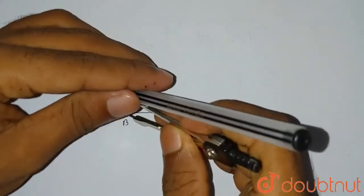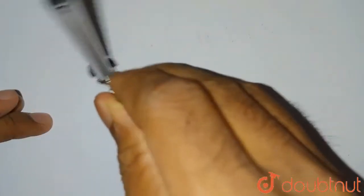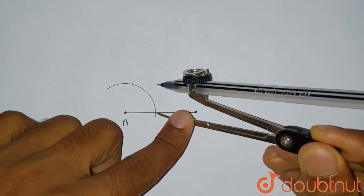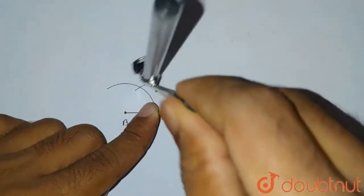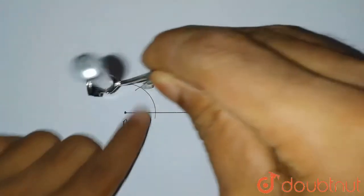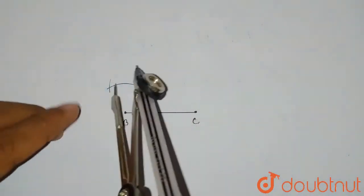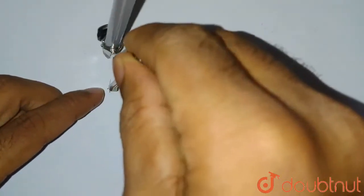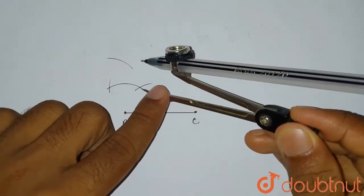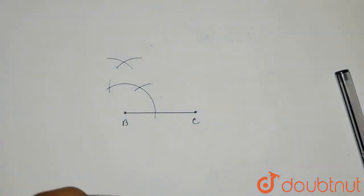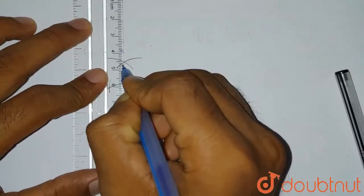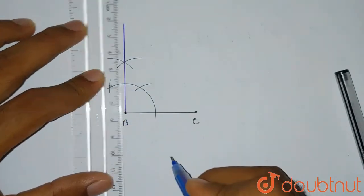We'll take this length and draw arcs intersecting the line. From this intersection point we'll draw another arc, and one more arc from this intersecting point will intersect the previous arc. Now we'll draw two more arcs from this intersecting point, giving us another intersecting point. From this intersecting point we'll draw a line — this will be the 90 degree line from B point.